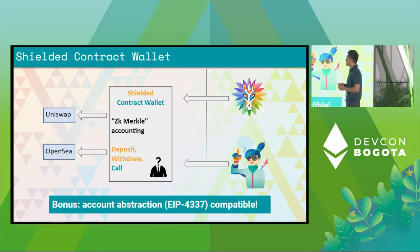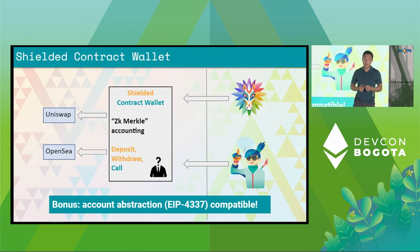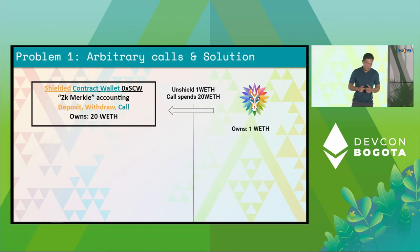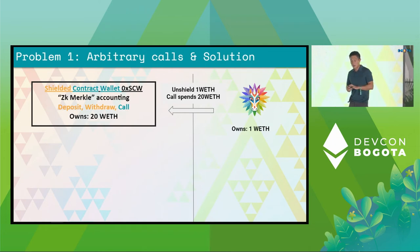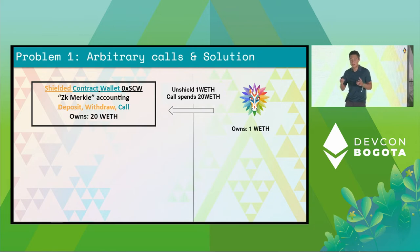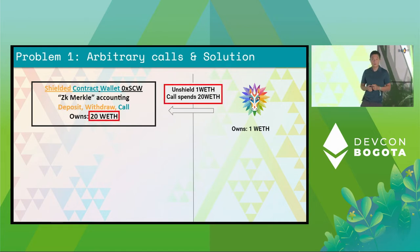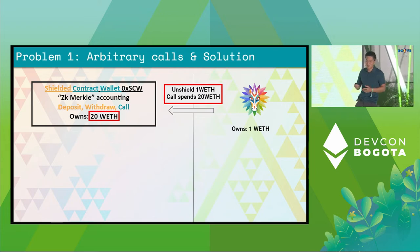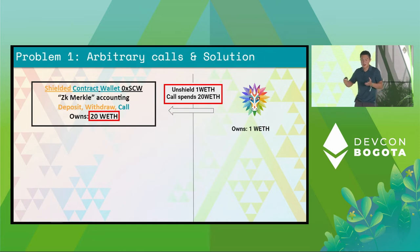As a bonus, we can make this contract wallet compatible with account abstraction, or EIP-4337. As it turns out, there are two problems if you want to build this — just combining a shielded pool with a smart contract wallet. The first problem is that when a user submits a transaction containing arbitrary calls, you can actually just submit it to steal the funds of the entire contract. If a user only owns supposed to own one Ethereum in the pool, but constructs a call that consumes 20 Ethereum — we shouldn't let this happen because people would be able to steal the entirety of the funds of the entire protocol.